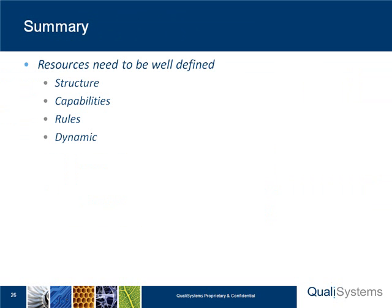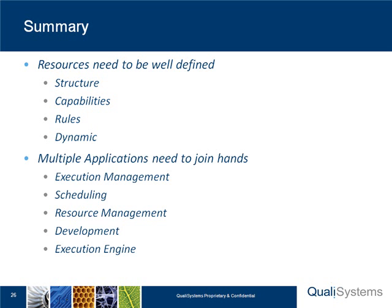To sum everything up, resources need to be well-defined: their structure — such as chassis, card, port, or an oscilloscope with different channels — their capabilities, such as what kind of protocols and what kind of connection, and the rules on top of these capabilities so we know what can be connected to where and which test can be executed in which station. These different parameters need to be dynamic so that a customer, according to their own scenario, can create the environment they need. The framework needs to be well-integrated — execution management must check with scheduling and resource management what is available and until when. The development teams need to be coordinated with all three, as well as the different execution engines running on the different stations. All of this solution has to be scalable, since already today we see thousands, if not tens of thousands, of different resources being managed within one environment.